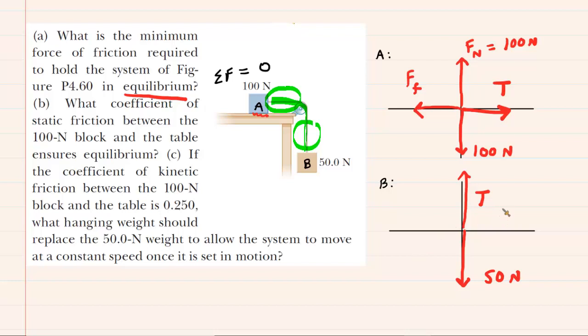And so, looking at block B, we know that because block B is in equilibrium, it's not accelerating. So if there's a downward 50 newton force, there has to be an upward tension force that's also equal to 50 newtons. That will help maintain block B in a state of equilibrium.